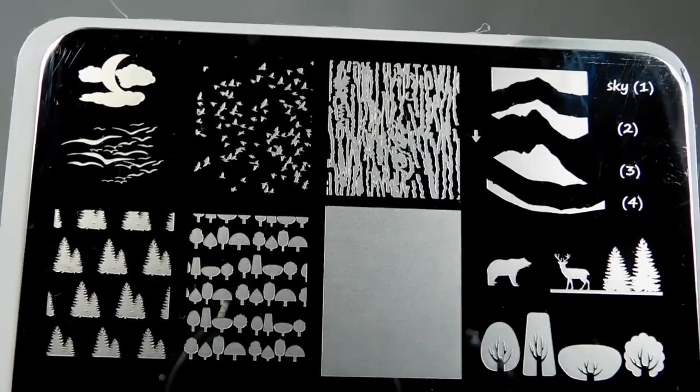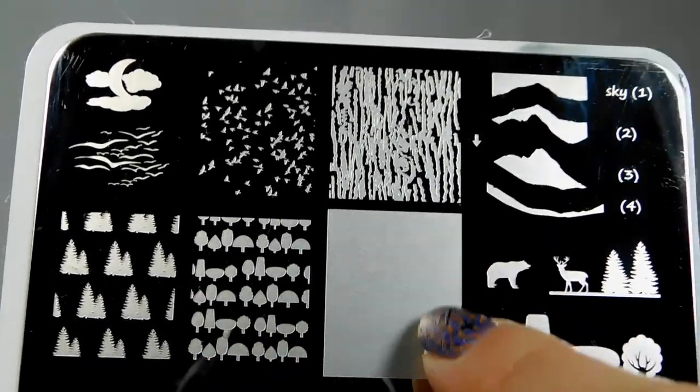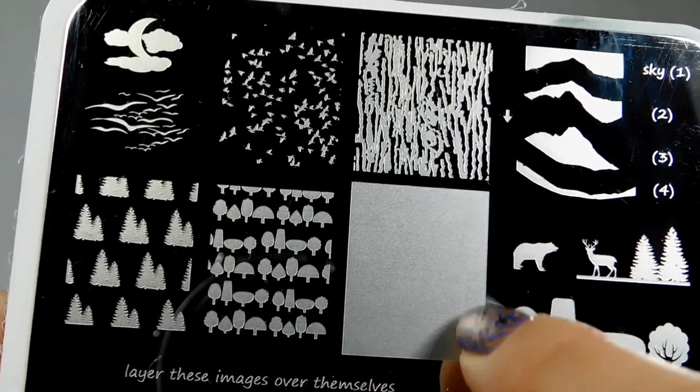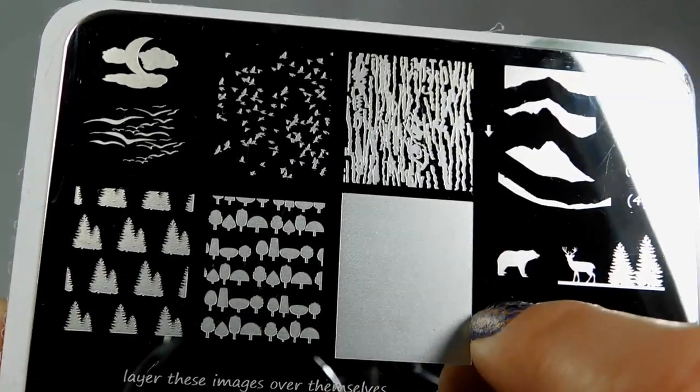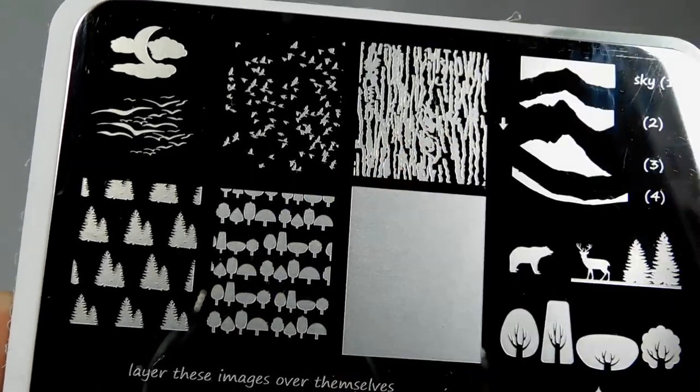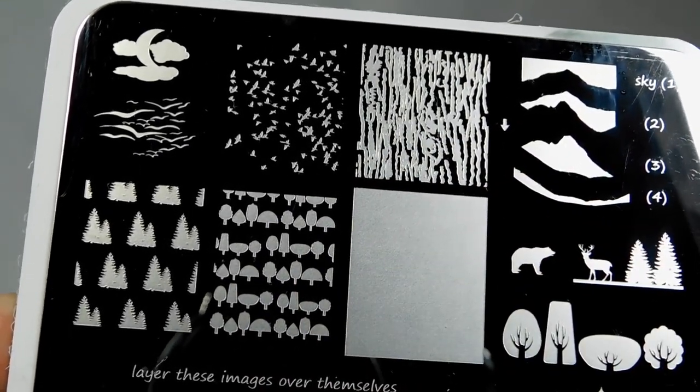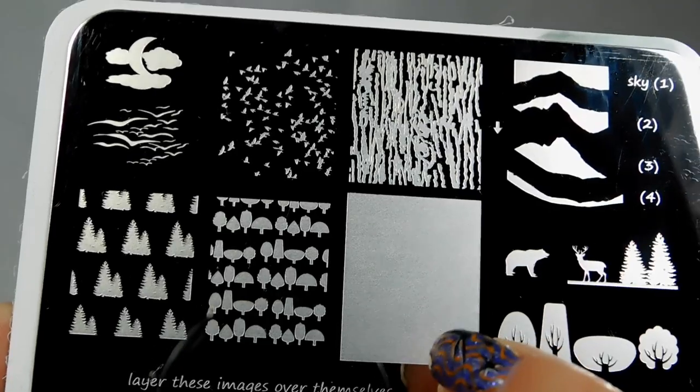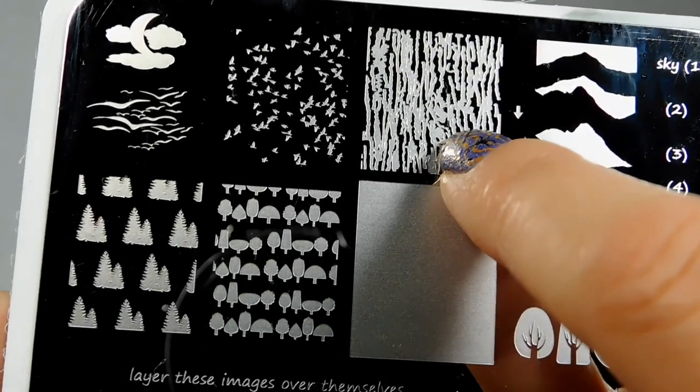Right off the bat, we see this one here. You've seen the techniques that you can do with this full square rectangle image. You can put dots of polish and scrape and get rainbow effects or marbled effects. The wood grain is really cool.